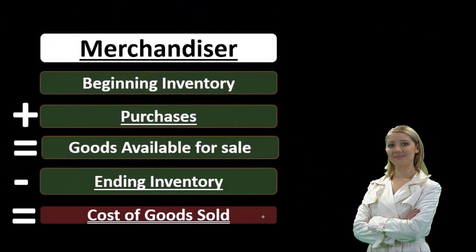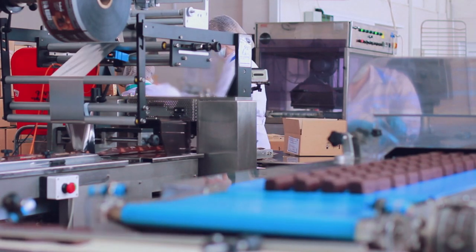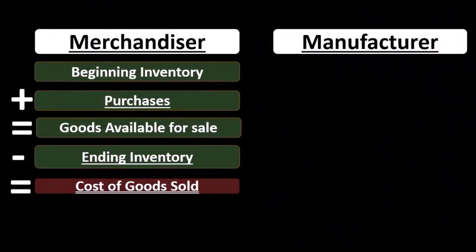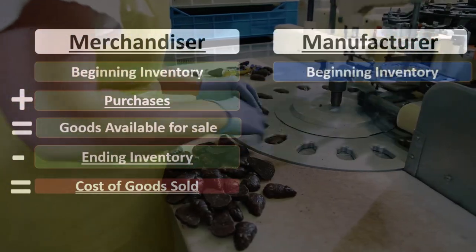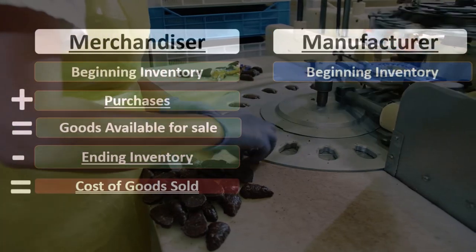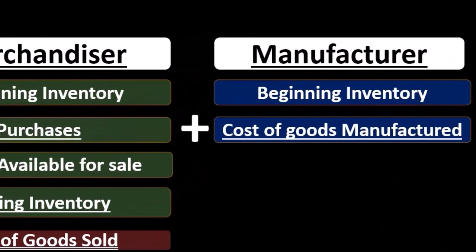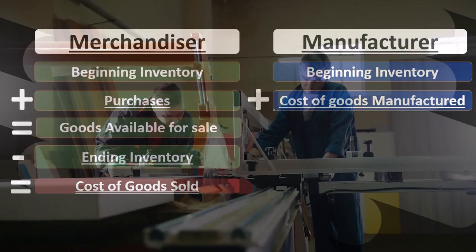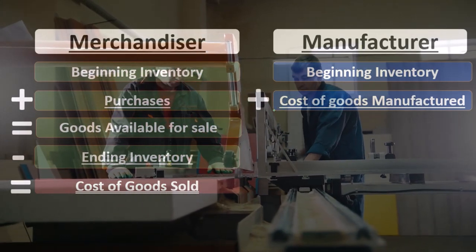That's the most important expense for a merchandiser or a manufacturer — the cost of the inventory that we are selling. Now, for a manufacturer, we can convert this formula: we still have beginning inventory, but rather than adding purchases, we add cost of goods manufactured. We didn't purchase these goods directly — we purchased the materials, but cost of goods manufactured includes not just materials, but also the direct labor and overhead that go into making the inventory.